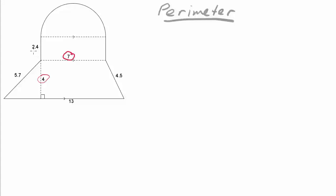So what we'll do is we'll just trace around and make sure we've got all of the side lengths that we need. So we've got two point four, five point seven, all the way across we've got thirteen, four point five on the right side. Now this is a rectangle so on this side here we'll have two point four units as well.